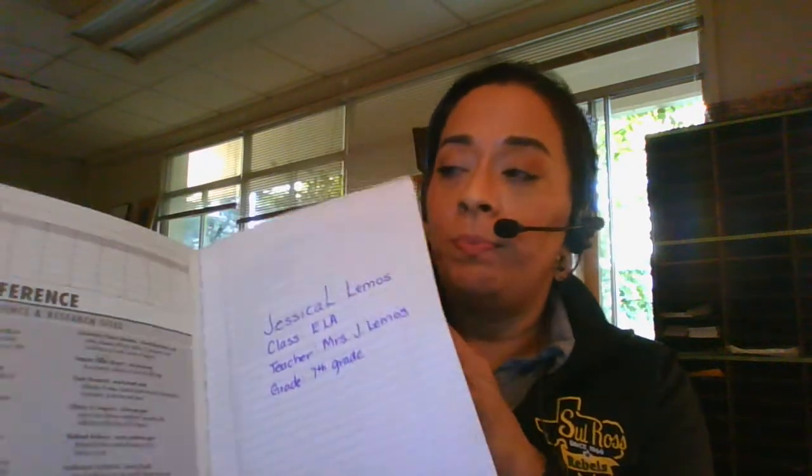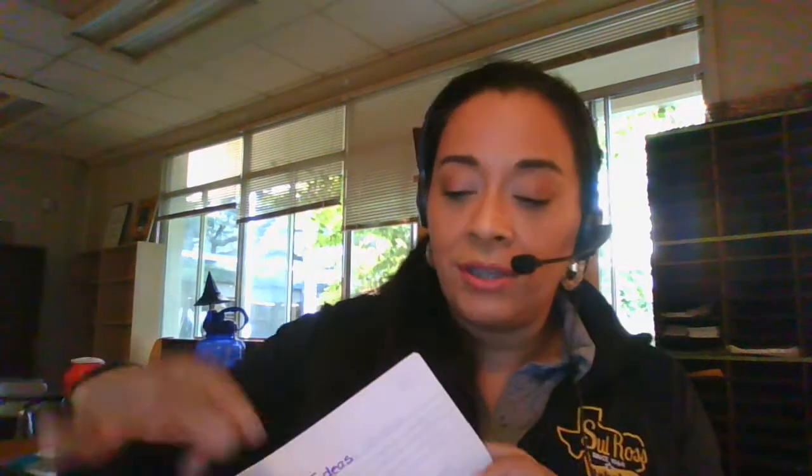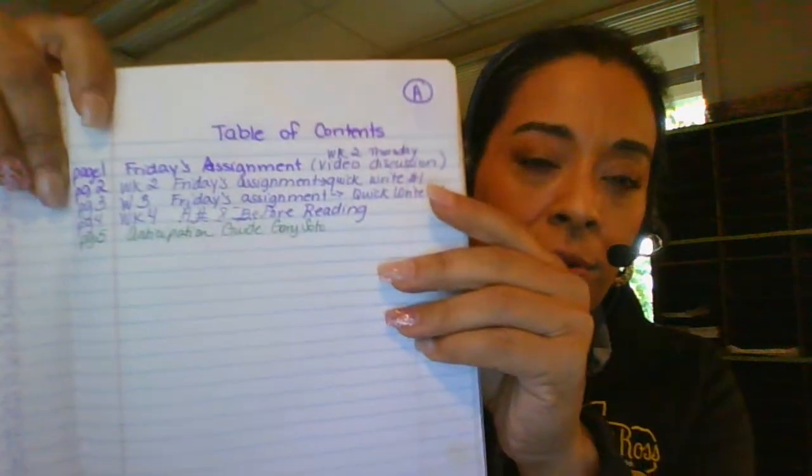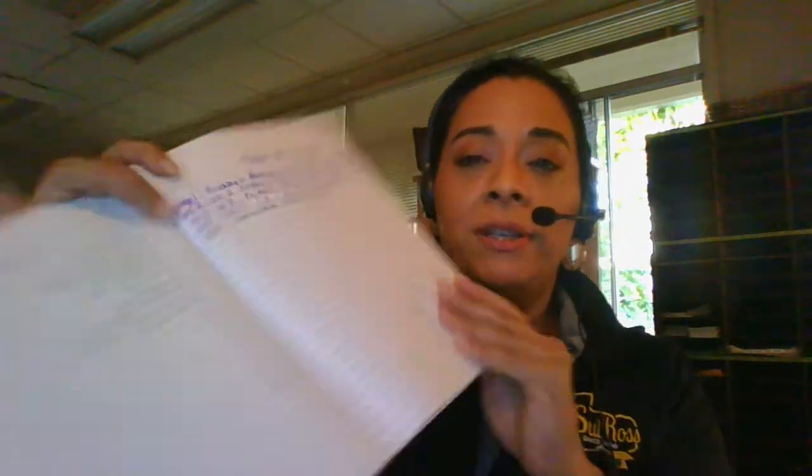Everything that you're going to do is going to be in your writing journal and you're going to take a picture of it and send it to me. Make sure that you understand that everything has titles to it and you have to put it in your table of contents, and I'll take a picture of this, adding this to your table of contents.